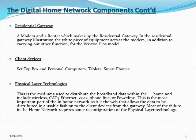Physical layer technologies. This is the medium used to distribute the broadband within the home and includes wireless, Cat5 cable, coaxial cable, phone lines, and power line. This is the most important part of the network as all of the devices use this to transfer their data. Most of the failure in a home network requires some reconfiguration of the physical layer technology.